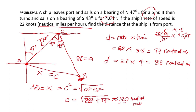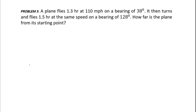We are done with problem number two: the distance the ship is from the port is approximately 120 nautical miles. Now we have problem number three.